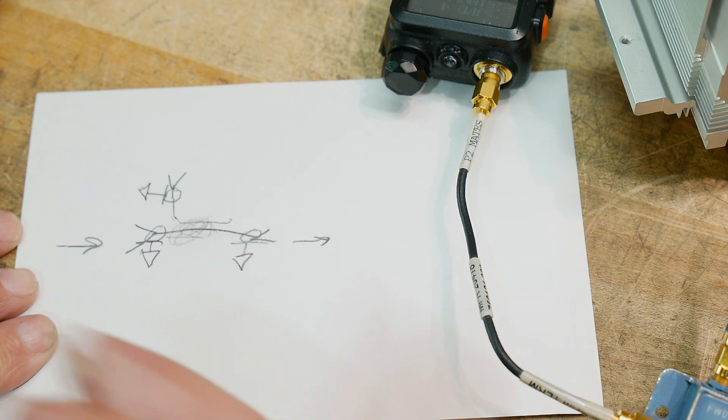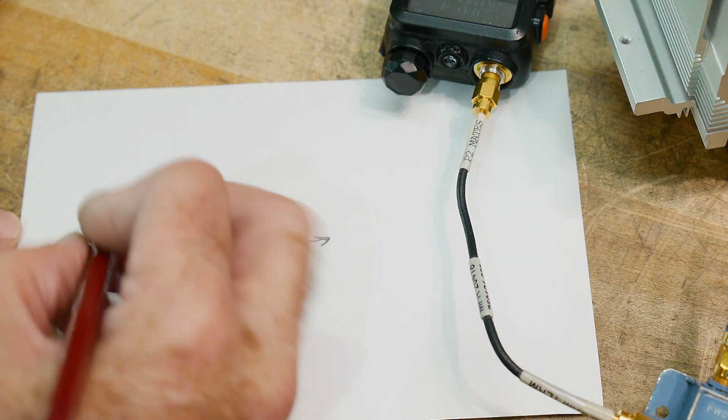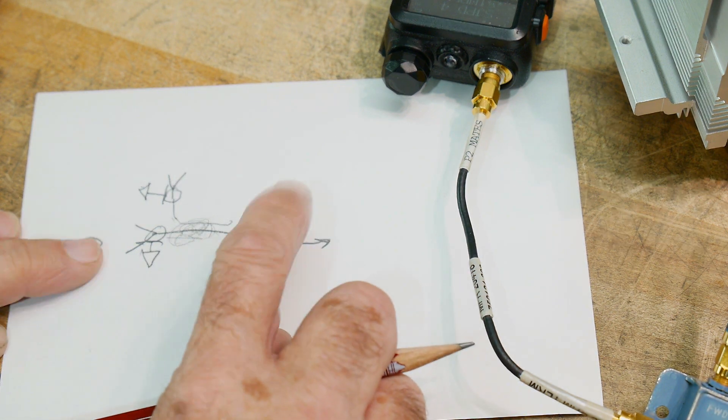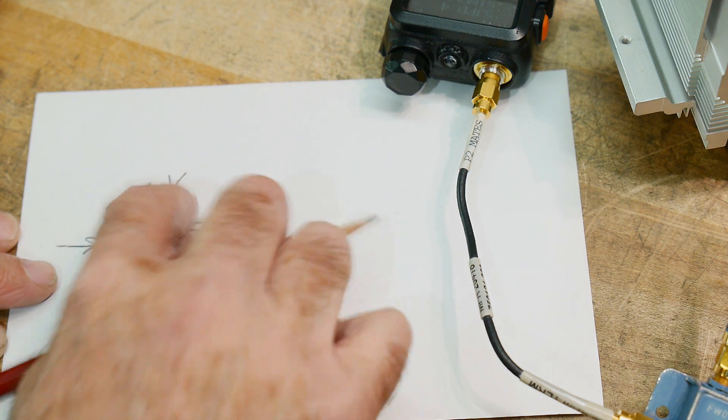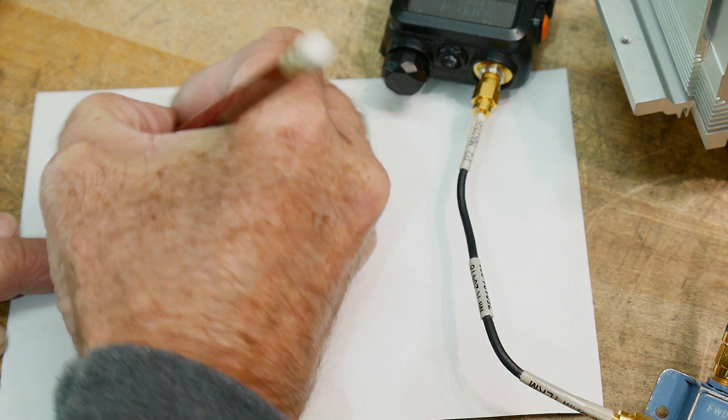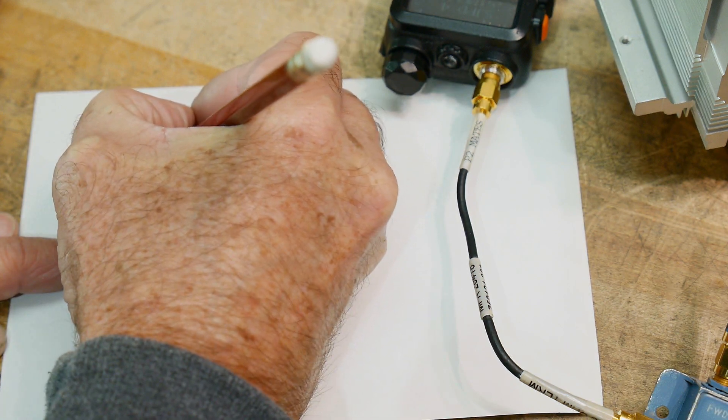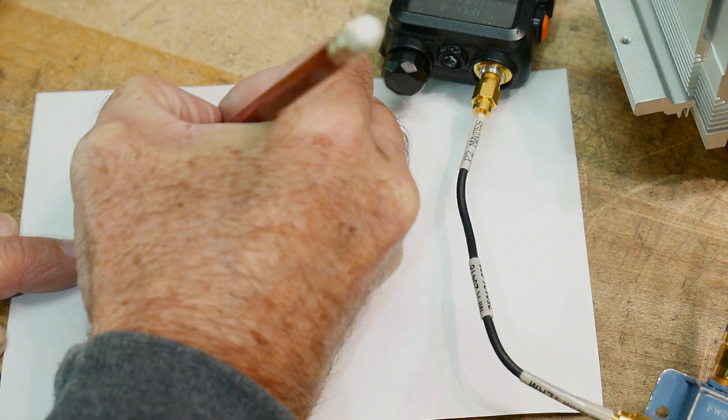So in the particular coupler that I have, from input to output, there's hardly any loss at all. But you're only taking off a little bit of the power. And this one measures as a 13 dB of coupling.